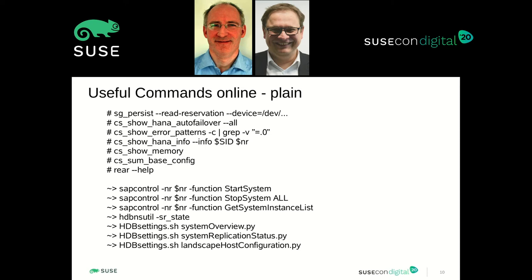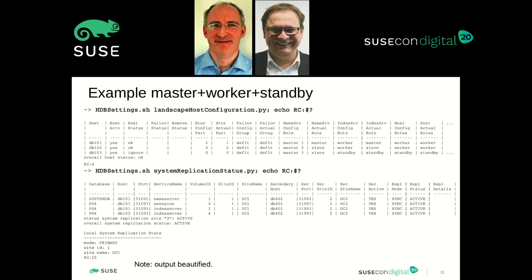We have a set of commands you can use to check your installation, the operating system, the cluster, and HANA. Even if you don't have a cluster up and running, you can get an overview on HANA and the operating system. For example, we have a tool to check the operating system log files for common error patterns. If you have lots of multipath errors in your messages file, you should look at that. There are also a lot of SAP or HANA-specific commands, and we have some helper scripts to put together information on HANA. Thomas will show the show-hana-info script later on.